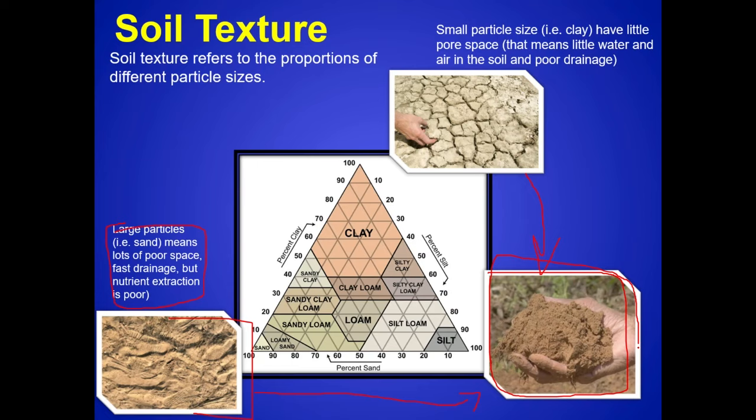We can split up these different textures into what's called a ternary diagram — a triangle diagram. In each corner you see silt, clay, and sand, each corner being an end member, with mixtures in between. The best mixture is right in the middle called loam. Loam is about 50% silt, 50% sand, and a little bit of clay — it's a mix of silt and sand and a little clay.